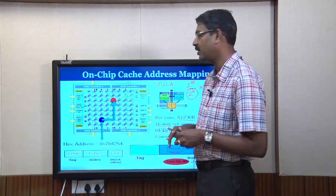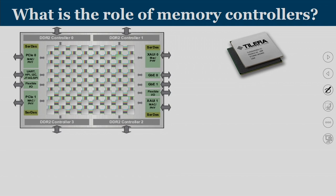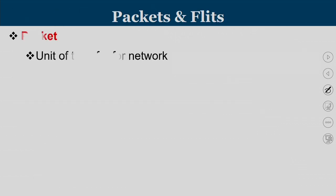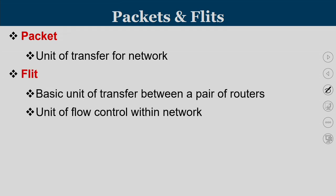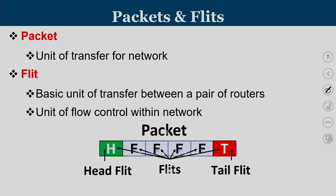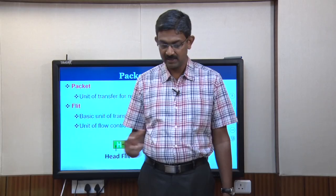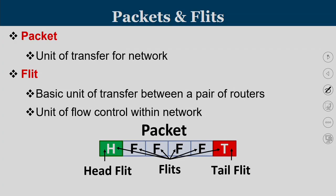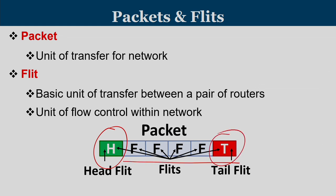A packet travels from one router to another through the network by hopping through individual routers using source and destination addresses in the header. The memory controllers in the TCMP act as gateways for main memory data to enter the chip. Packets are divided into flits — a packet has a head flit, body flits, and a tail flit. In traditional wormhole routing, all flits of a packet travel through the same route.